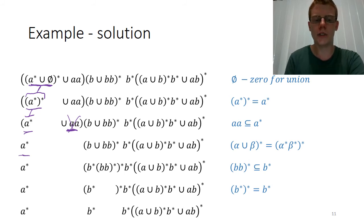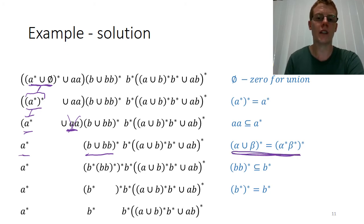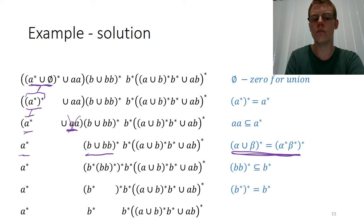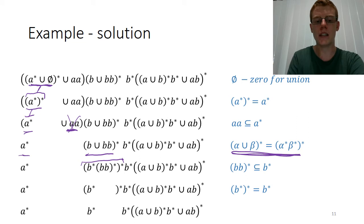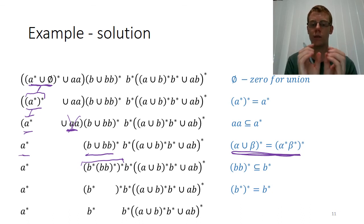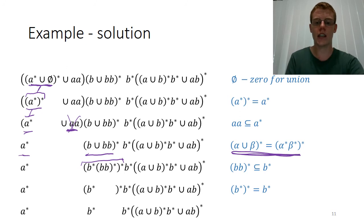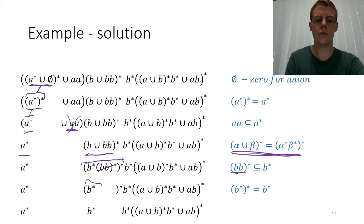Now we start looking at B union BB all Kleene-starred. We note the rule that the union of something Kleene-starred can be represented instead as a concatenation of two cleans all Kleene-starred again. So B union BB star becomes B star concatenated with BB star all Kleene-starred. At this point, BB star is a subset of B star. And when we have two regexes Kleene-starred concatenated, and one is a subset of the other, we can remove the subset — so we remove BB star and end up with just B star.